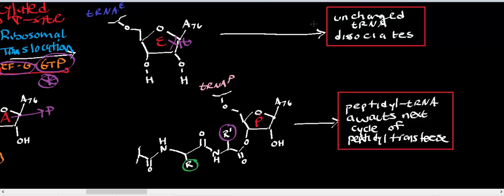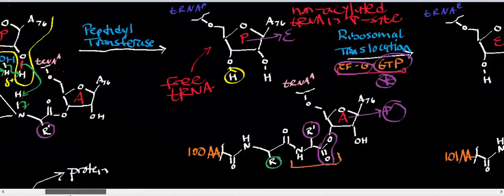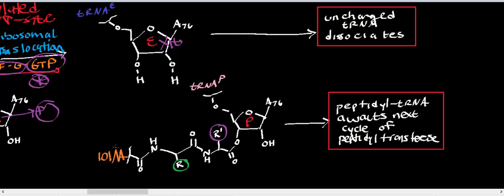So whatever's in the E site goes away and is free to react with another cycle of aminoacyl-tRNA synthetase, and you'll get more protein synthesis that way. Whatever was in the A site ends up in the P site. So now you have this growing polypeptide chain. Now it's 101 amino acids. Remember I started with 100? Well, I added an extra amino acid, so I'm going to kind of combine those into 101. And now it's in the P site.